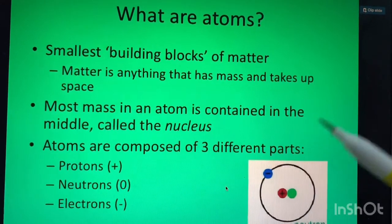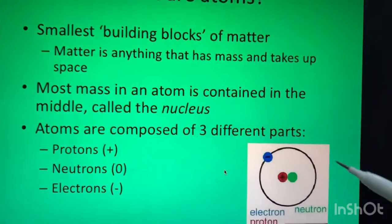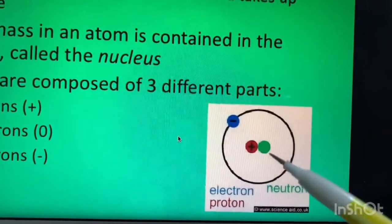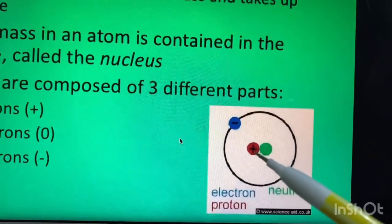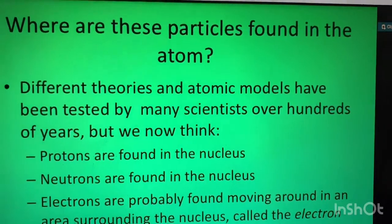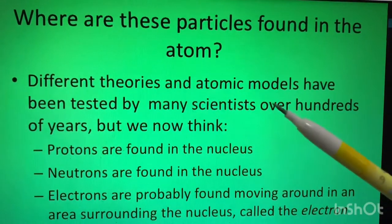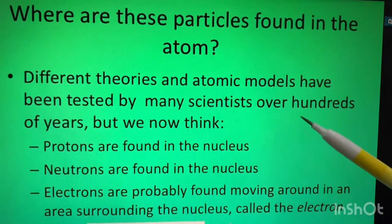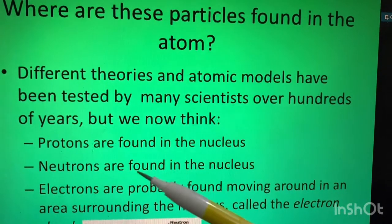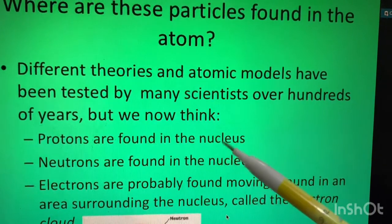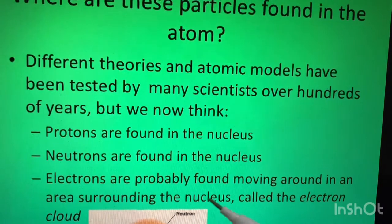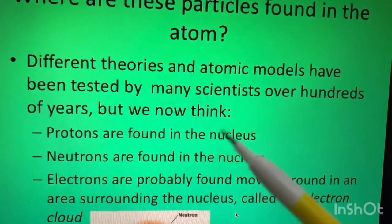Atoms are basically composed of three different parts: proton, neutron, and electron. Looking at the diagram, we have electron, proton, and neutron. The neutron is the green one, proton (positive) is the red one, and electron is the blue one, which is negative. Protons are found in the nucleus, neutrons are also found in the nucleus, and electrons are found moving around in the area surrounding the nucleus.